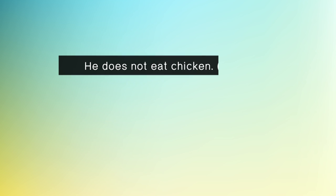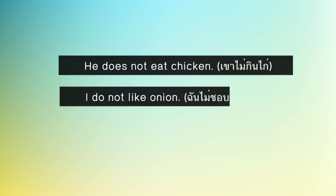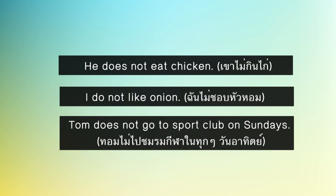For example: 'He does not eat chicken.' 'I do not like onion.' 'Tom does not go to sports club on Sundays.' You can see that when do or does is present as the helping verb, the main verb that follows is kept in its base infinitive form — it is not conjugated.